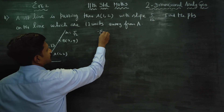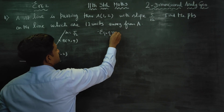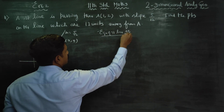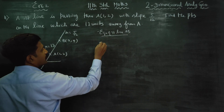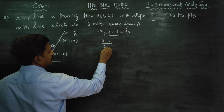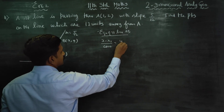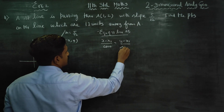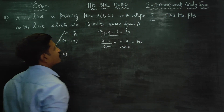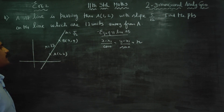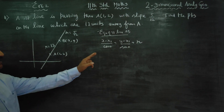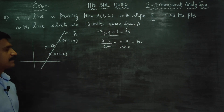The equation of straight line AB — that is the formula: x minus x1 by cos theta is equal to y minus y1 by sin theta is equal to R. In this formula, we will use it to find x and y.